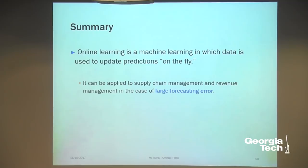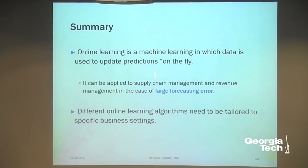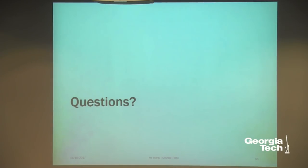To summarize: all three different projects are built on the technique known as online learning. If there's one thing to remember, it's that online learning is a useful tool for price optimization — it means collecting data in real time and estimating demand on the fly. It can be applied to many different supply chain and revenue management problems, especially when you have large forecast error at the beginning. By showing these three different projects, I want to emphasize that for different companies you have different situations creating different constraints, so when implementing online learning you may need to choose or adjust different tools to fit the specific constraints the company faces. That's the end of my talk.